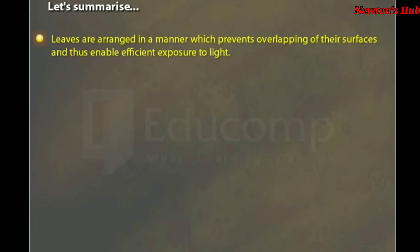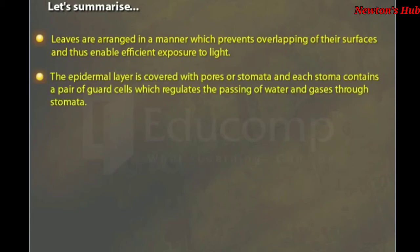Let's summarize. Leaves are arranged in a manner which prevents overlapping of their surfaces and thus enables efficient exposure to light. The epidermal layer is covered with pores or stomata. And each stoma contains a pair of guard cells which regulates the passing of water and gases through stomata.